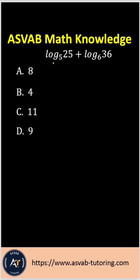The problem says log base 5 of 25 plus log base 6 of 36. You can add logs together if the bases are the same, but they are different. So in order to solve this problem, what do you have to do?